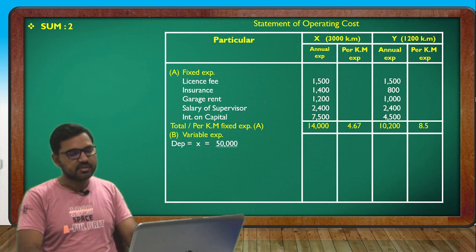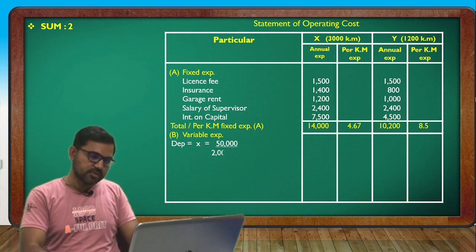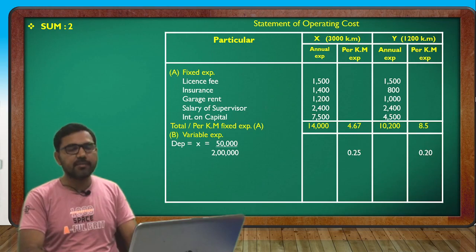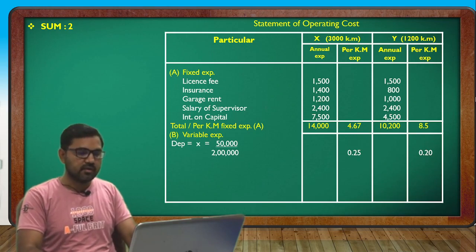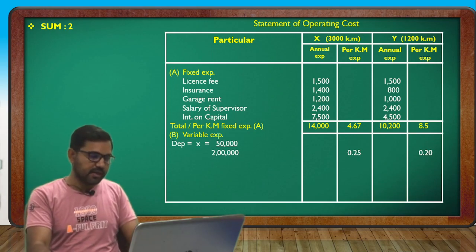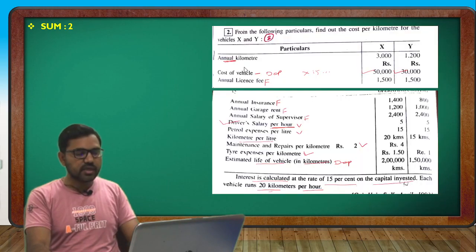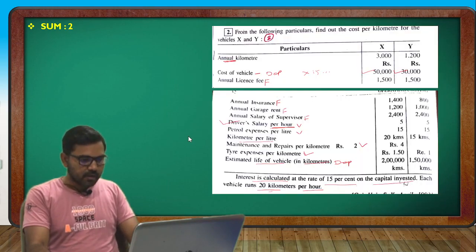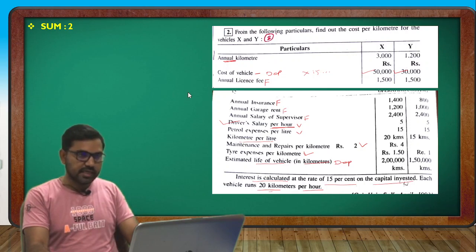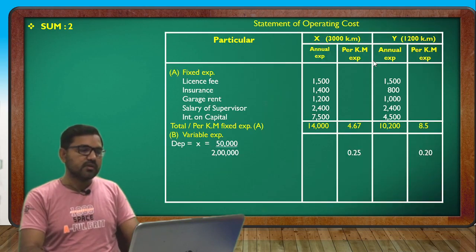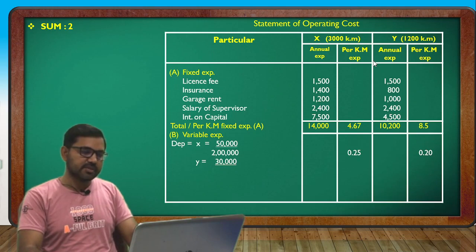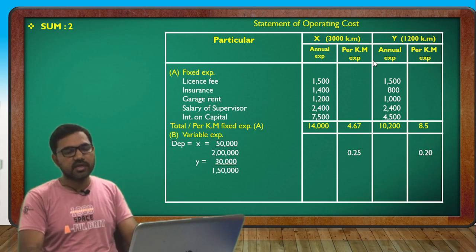Now depreciation: for X, cost is 50,000 and estimated life is 2,00,000 km; scrap value is 6,000. Depreciation per km for X = 0.25 and for Y: 30,000 divided by 50,000 gives 0.20 per km.